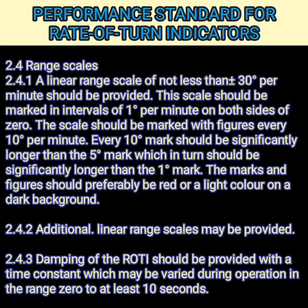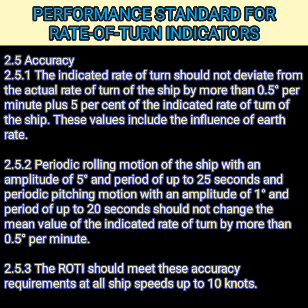A linear range scale may also be provided. There is a requirement that damping of the rate of turn indicator should be provided with a time constant which may be varied during operation in the range 0 to at least 10 seconds. The accuracy requirement states that the indicated rate of turn should not deviate from the actual rate of turn by more than half a degree per minute plus 5% of the indicated rate of turn. Up to 10 degrees, the maximum error is about 1 degree; at 30 degrees it will be about 2 degrees.